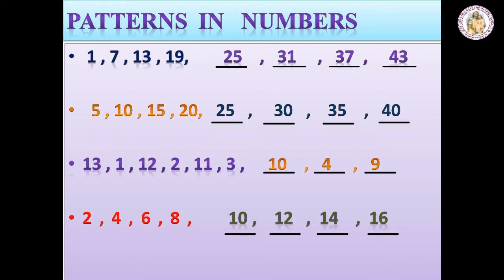See the second sum. Five, ten, fifteen, twenty. What comes next? Twenty-five, thirty, thirty-five, forty. The pattern based on this sum is counting by fives.